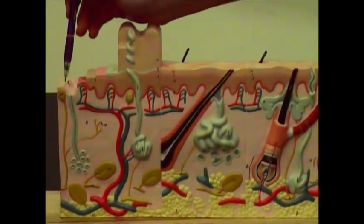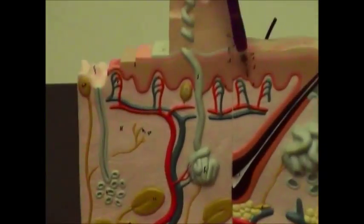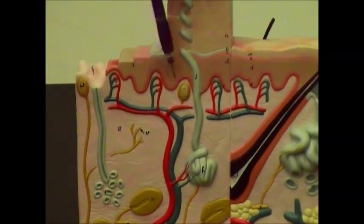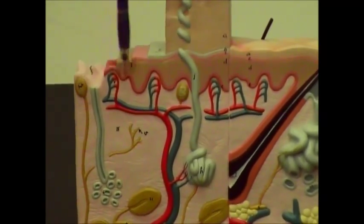First of all, if you remember, you've got these light touch receptors up here in the dermal papilla called Meisner's corpuscles. So, they are there for light touch.